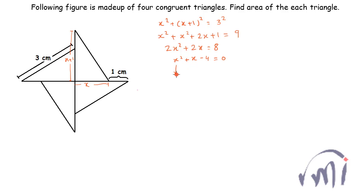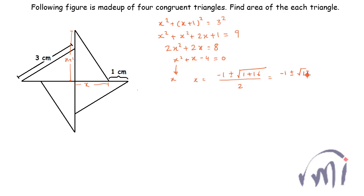From here you can find the value of x using the quadratic formula. Doing that gives x = (−1 ± √(1 + 16)) / 2, which equals (−1 ± √17) / 2. You could then substitute this value into the area formula to find the area, but this seems like a slightly lengthy method.